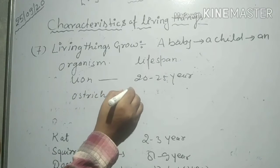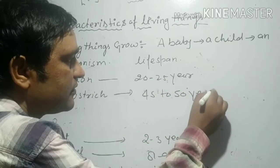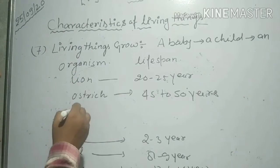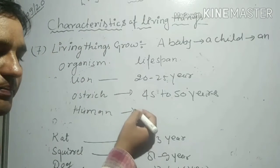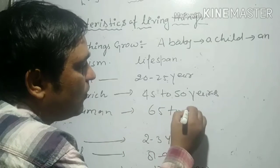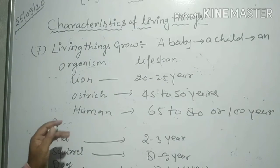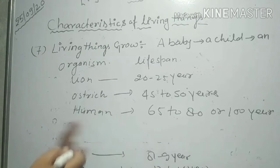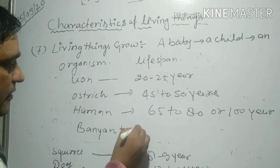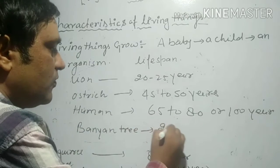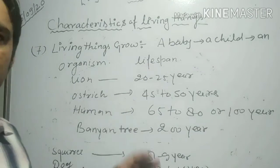The life span of an ostrich is 45 to 50 years. The life span of human beings is a maximum of 65 to 80 years, or up to 100 years. The life span of a banyan tree is around 200 years. These are the life spans of certain animals and organisms.